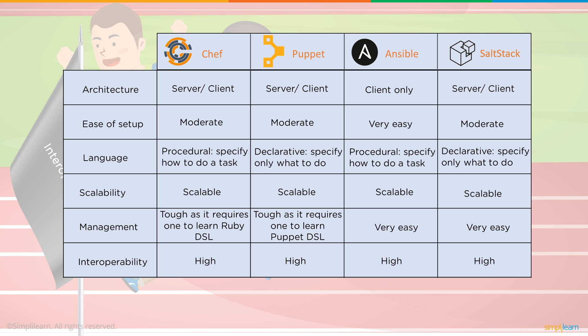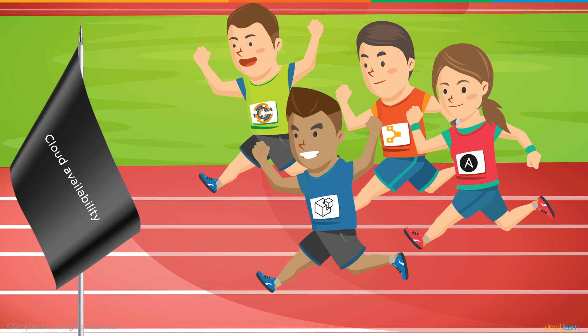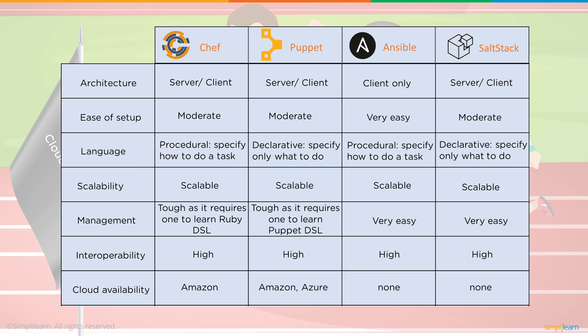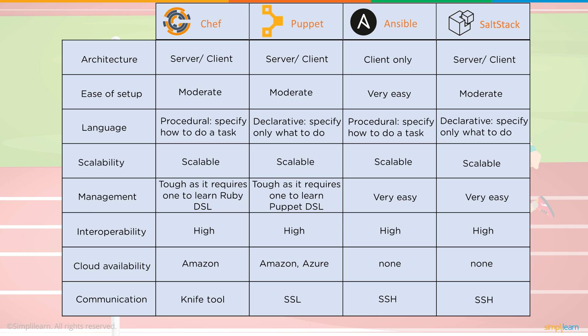Interoperability is very high across all four tools, similar to scalability. On cloud availability, both Ansible and SaltStack have a gap — neither is available in the most popular cloud environments. Puppet and Chef are available in both Amazon and Azure. For communication, Chef uses its own knife tool, Puppet uses SSL, and Ansible and SaltStack use SSH. Bottom line: all four tools are very secure in their communication.